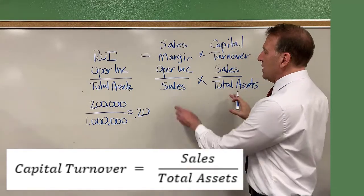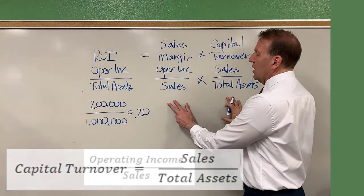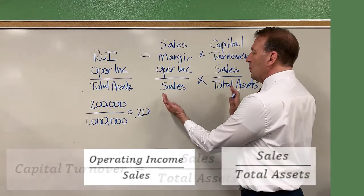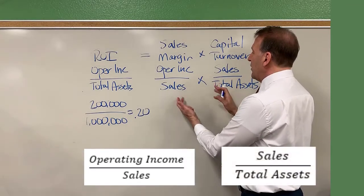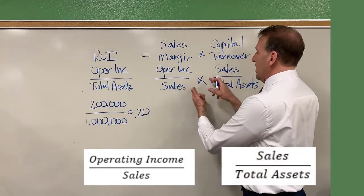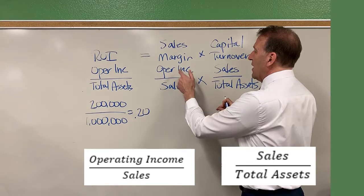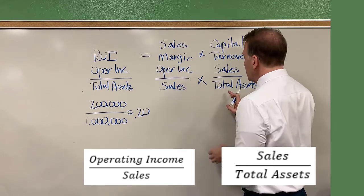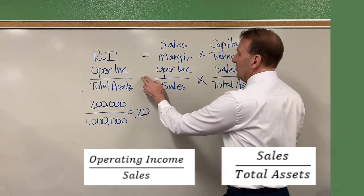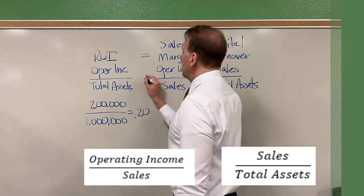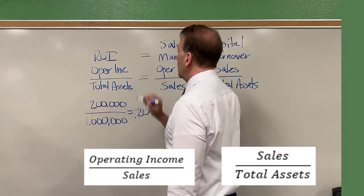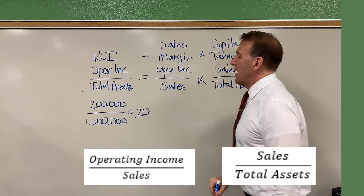Capital turnover is sales divided by your total assets. When you multiply these two together, sales will cancel out and you have operating income divided by total assets, which is your return on investment.